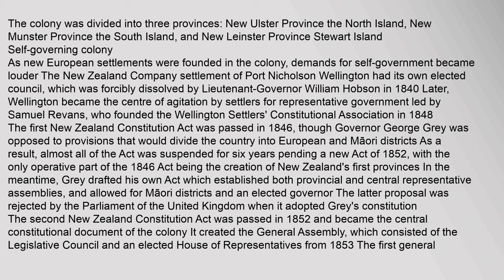Almost all of the Act was suspended for six years pending a new Act of 1852, with the only operative part of the 1846 Act being the creation of New Zealand's first provinces. In the meantime, Gray drafted his own Act which established both provincial and central representative assemblies, and allowed for Maori districts and an elected governor. The latter proposal was rejected by the Parliament of the United Kingdom when it adopted Gray's constitution. The second New Zealand Constitution Act was passed in 1852 and became the central constitutional document of the colony.